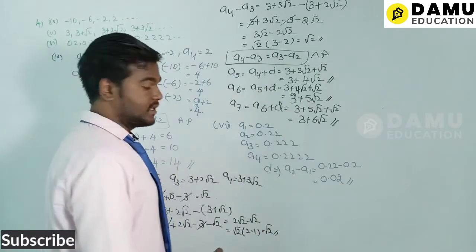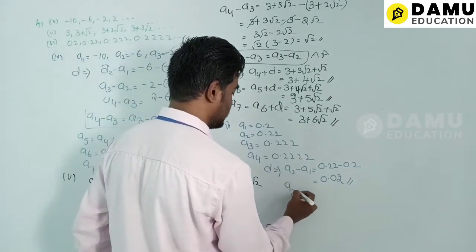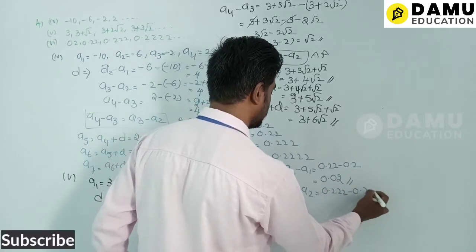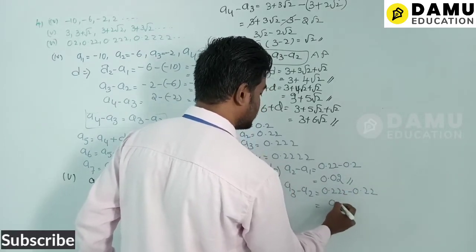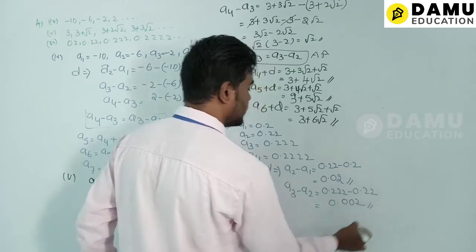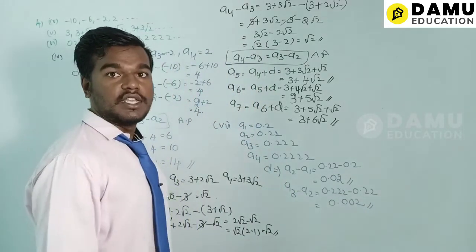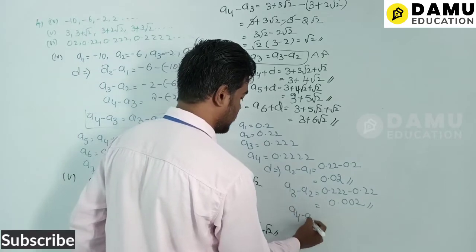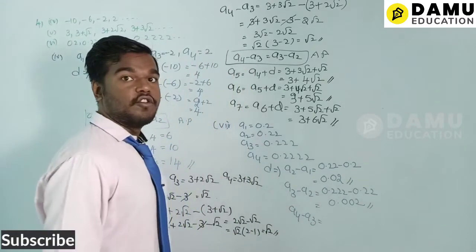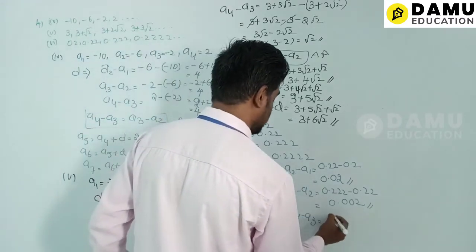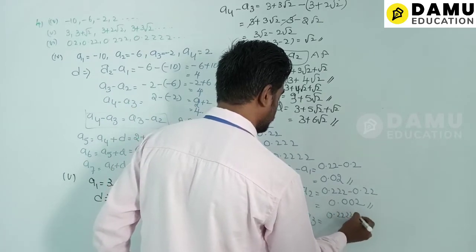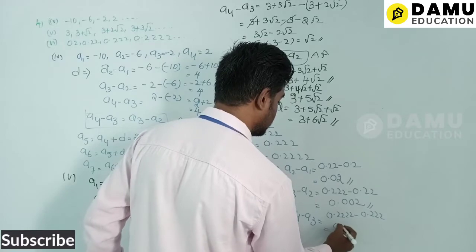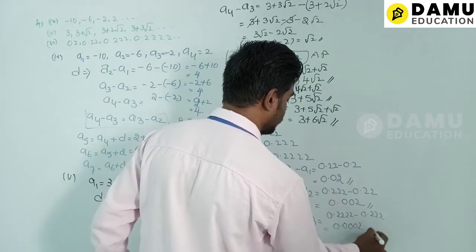Then a3 − a2 = 0.222 − 0.22 = 0.002. And a4 − a3 = 0.2222 − 0.222 = 0.0002.